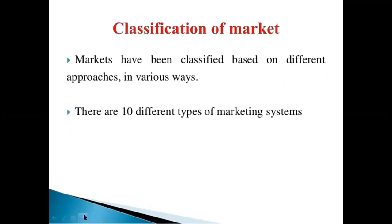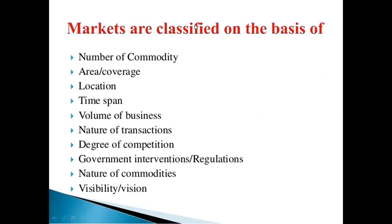Markets have been classified based on different approaches in various ways. There are 10 different types of market systems. Markets are classified on the basis of: number of commodities, area coverage, location, time span, value of business, natural transaction, degree of competition, government intervention, regulation, nature of commodity, and visibility.